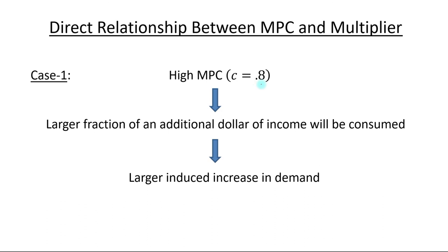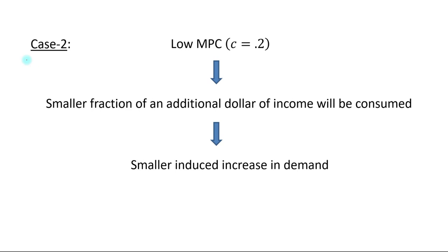Case 1: If we take a high MPC, say a value of 0.8, it implies a larger fraction of an additional dollar of income will be consumed, due to which there will be a larger induced increase in demand. In this situation, the value of the multiplier will be larger. Case 2: If we take a low MPC, say a value of 0.2, it implies that a smaller fraction of an additional dollar of income will be consumed, which implies a smaller induced increase in demand. In this scenario, the value of alpha, that is the multiplier, will be smaller.